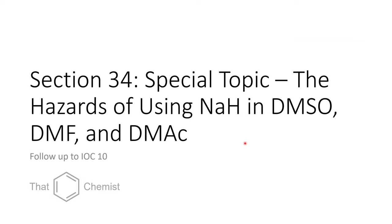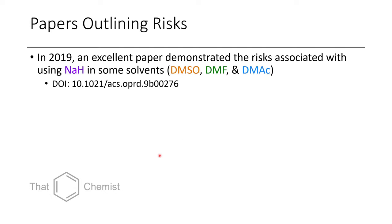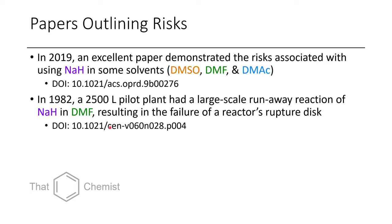Let's get into today's special topic: the use of sodium hydride in DMSO, DMF, and dimethylacetamide — a follow-up to lecture 10. There are two papers that highlight the risks. The best is a 2019 paper from OPRD, a good journal for research in an industrial chemistry setting. They also mention an earlier report from Chemical and Engineering News in 1982, where a 2,500-liter reaction in a pilot plant had a large-scale runaway using sodium hydride in DMF, causing the reactor's rupture disk to fail.